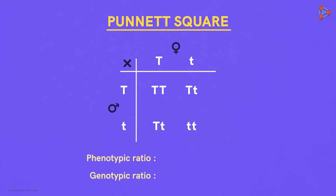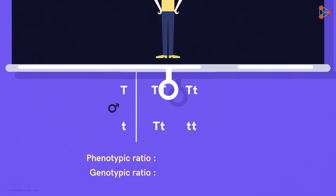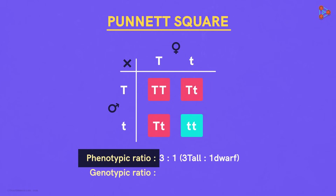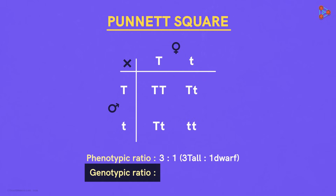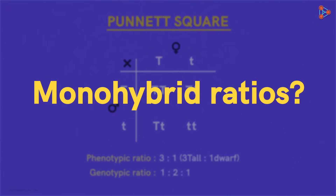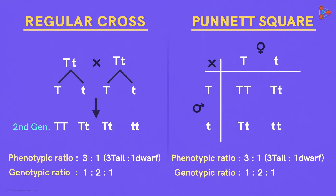Can you find the phenotypic and the genotypic ratios here? Phenotype refers to the observable physical properties. We can clearly see that there are three tall plants and one dwarf plant, so the phenotypic ratio is 3 to 1. What about the genotype? There is one homozygous tall case, two heterozygous tall cases, and one homozygous recessive case, so the genotypic ratio is 1 to 2 to 1. Aren't these the monohybrid ratios? Yes, they are. We get exactly the same results that we obtained on crossing the F1 generation previously.